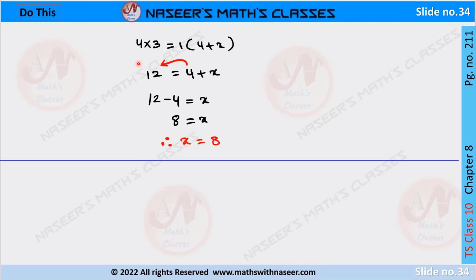After cross multiplication, we can write 4 into 3 is equal to 1 into 4 plus x. 4 into 3 is written as 12, and 1 into 4 plus x is written as 4 plus x. Now transpose 4 from RHS to LHS. We can write it as 12 minus 4 is equal to x. 12 minus 4 is 8, so we can write x is equal to 8.